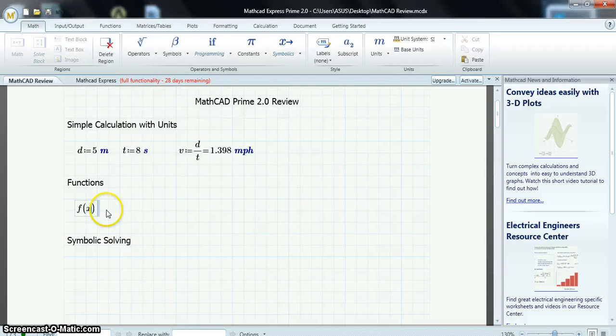So, I'll define a function, F of X, to be sine of X, plus cosine of X. Now, I can evaluate the function I just defined at some value, so I'll evaluate at pi over 2. So, I'll type P, and then control G, and it changes to the constant pi over 2, equals 1. Notice that constants are green. That will always be the case.